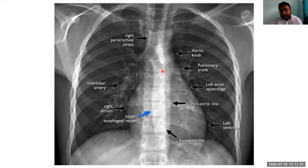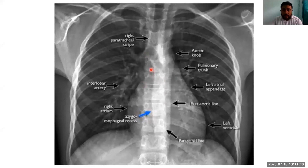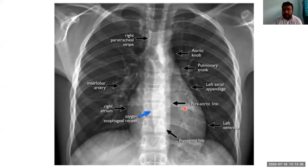Then we can see the shadow of the heart. On the right side, you can see the hilum of the lung. This is the right atrium. At the base, it is mainly formed by the right ventricle. On the left side, there are left atrial appendages and left ventricle. Coming to soft tissue — these are the bronchoalveolar markings, the lung parenchyma, which you can see on both sides.